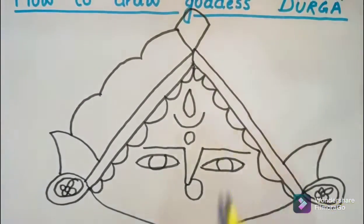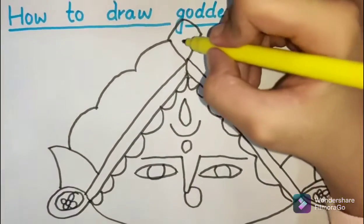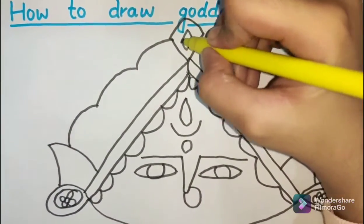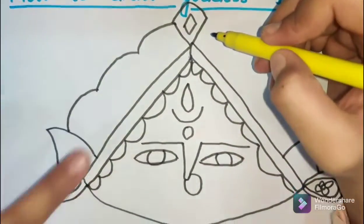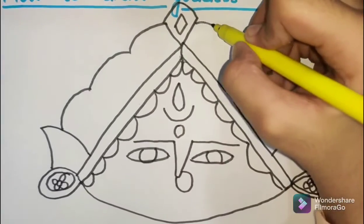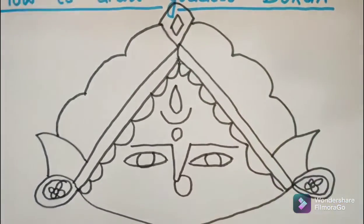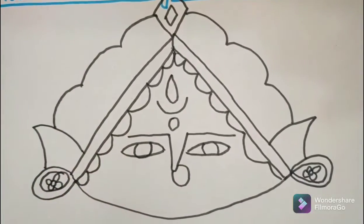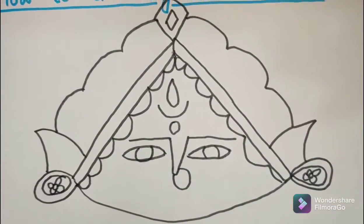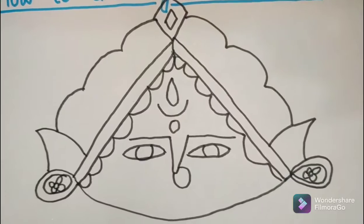Over here we are going to make another U, but inside it we are going to make a diamond. Now we are going to make these three U's again, one, two, three. It should not be like you made three over here and then five over here. It needs to be three, three on both sides. They need to be the same on both sides.